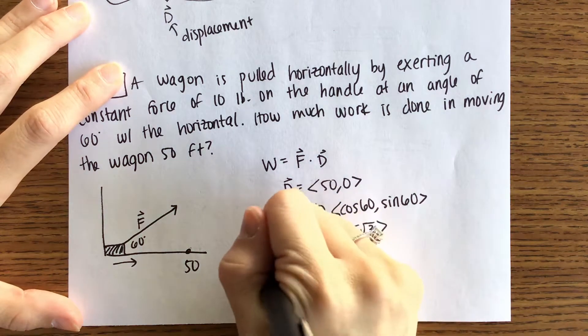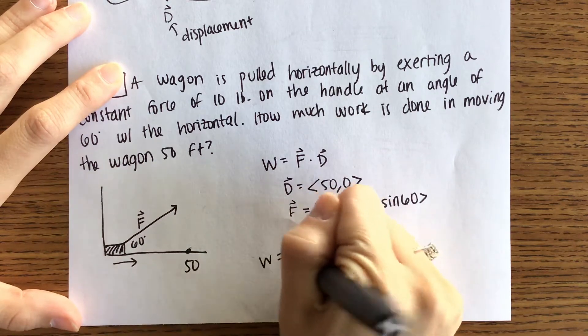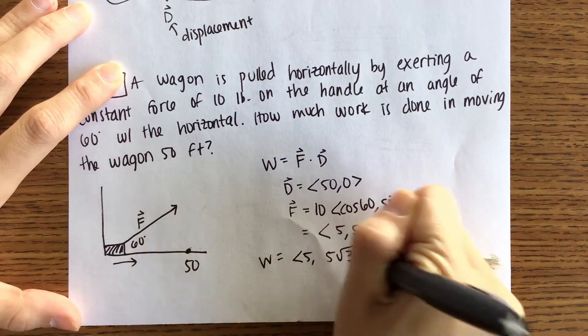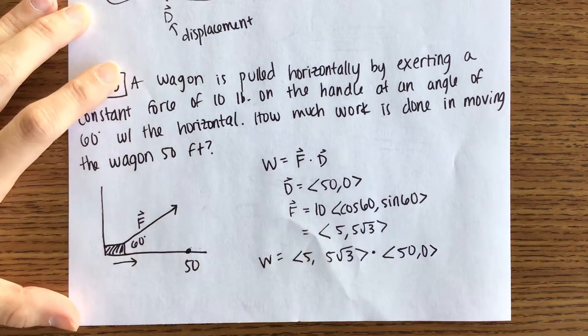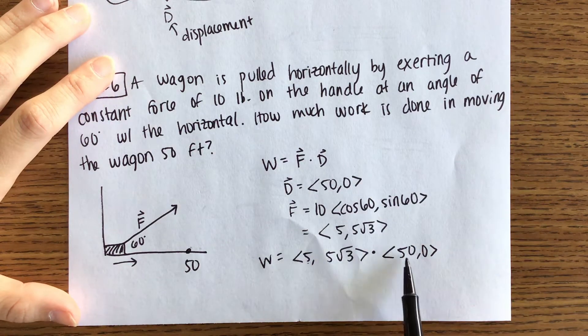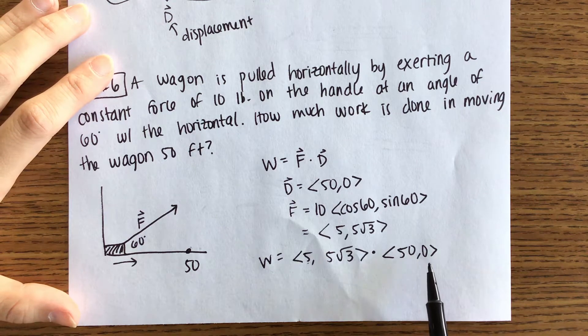So our work then is going to be the force vector. That 5 comma 5 root 3. Dotted with the direction vector. That 50 comma 0. If you remember from yesterday. You're going to multiply the likewise components and then take the sum.